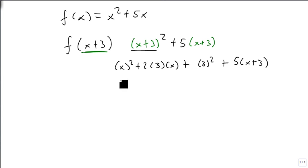So now we'll get rid of the parentheses. This is x squared plus 6x plus 9 plus 5x plus 15. Let's make that look like a better 5. Combine like terms and we get x squared plus 11x plus 24.